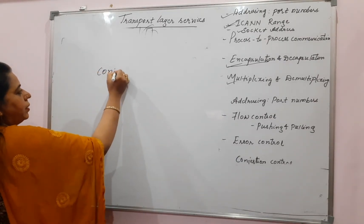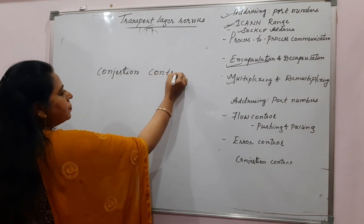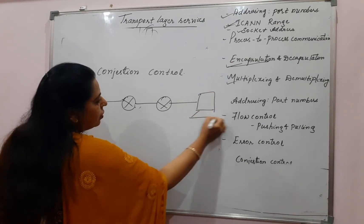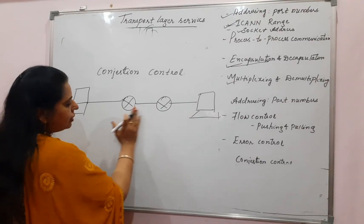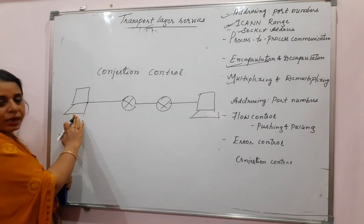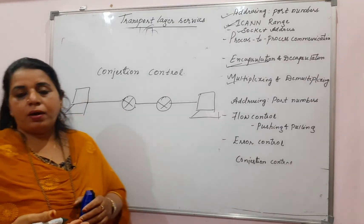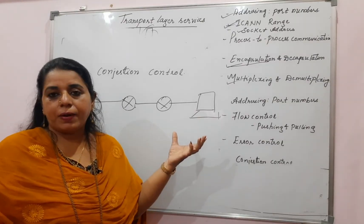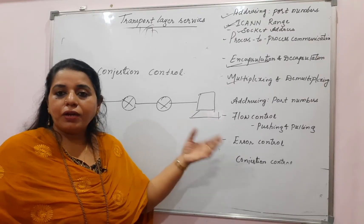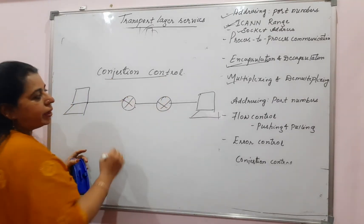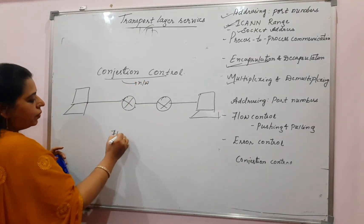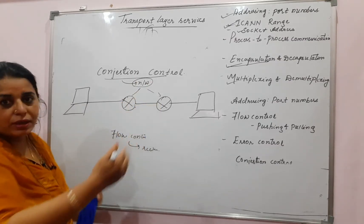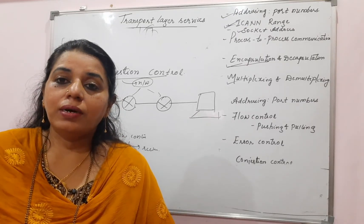The last service is congestion control. While flow control deals with the receiver's processing capacity, congestion is a network problem. The routers between the sender and receiver must also process packets at the rate they are being sent. If they cannot, the router buffers fill up and packets start getting dropped — this is called congestion in the network. There should be a mechanism to control this congestion as well, which you will learn in detail when studying transport layer protocols.